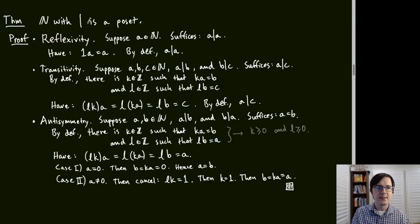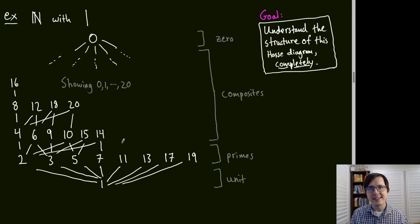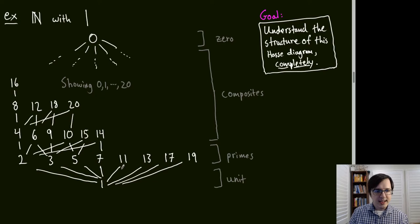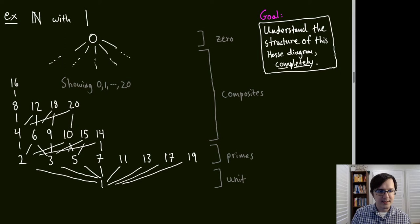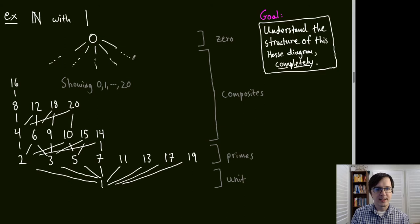Let's look at the Hasse diagram for divisibility on the first 21 natural numbers starting from 0. It's far more complicated than the ≤ diagram. At the very bottom is 1, called a unit. Above it is a layer of primes, then numbers with more divisors, and at the very top is 0, which every number divides. Our goal is to understand the structure of this diagram completely.